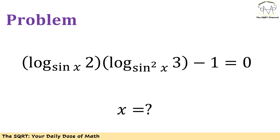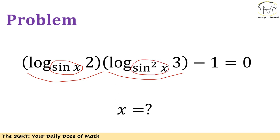In this problem we have a multiplication of two terms: log of 2 in base sine of x, times log of 3 in base sine squared of x, minus 1, equals to 0. We are going to find the possible values for x. Before moving forward, make sure you pause the video to think about this problem.